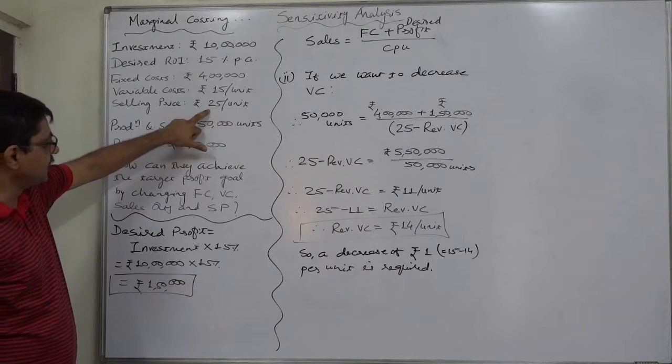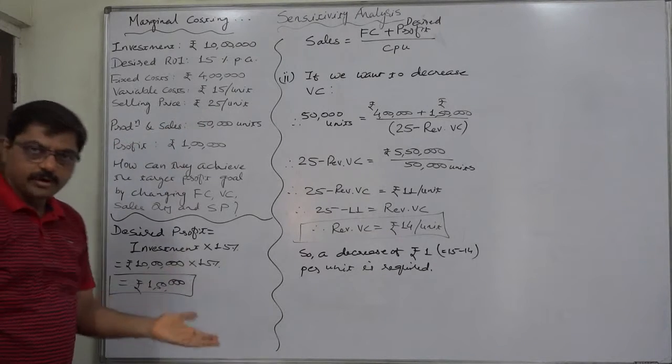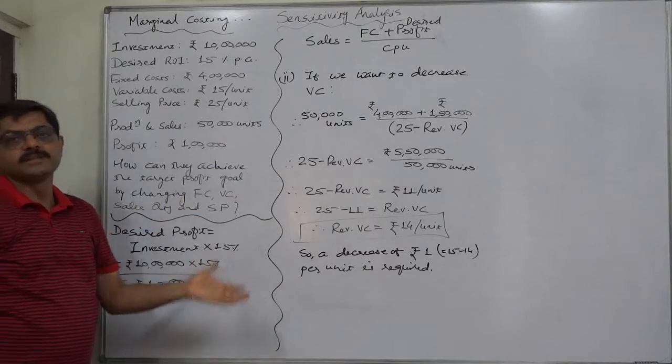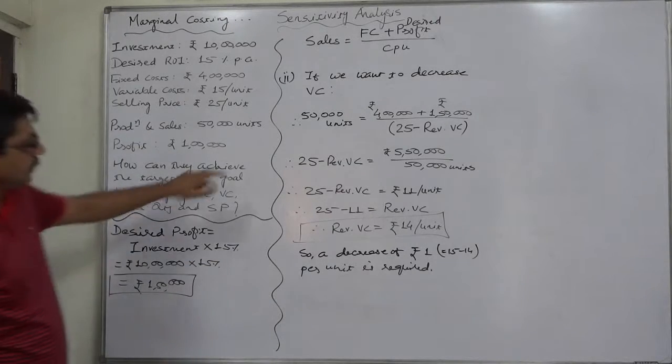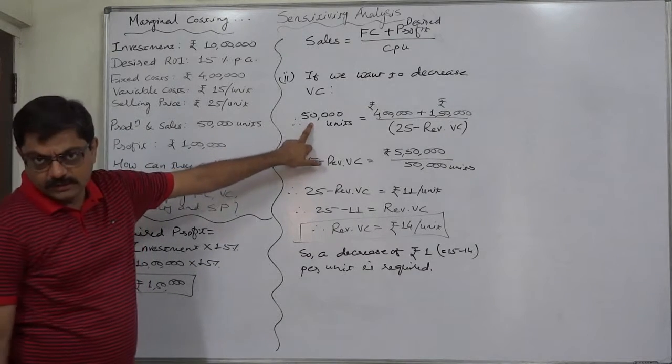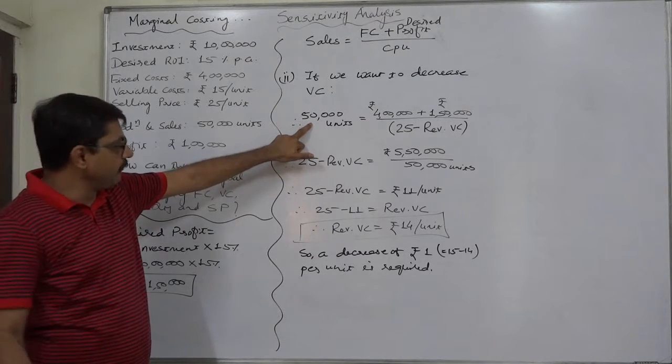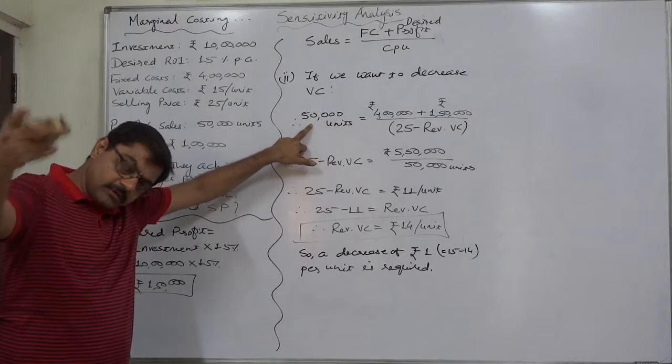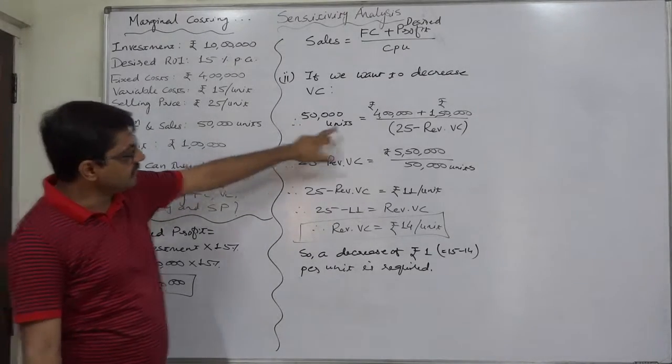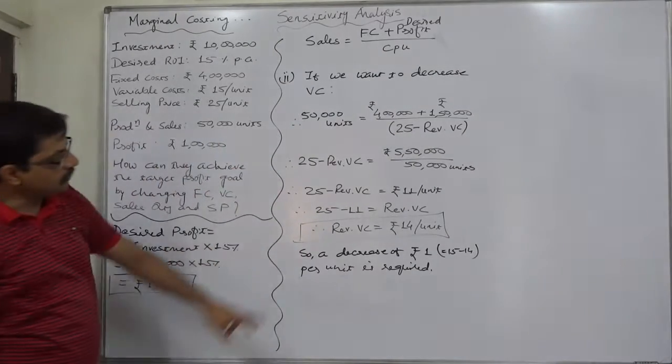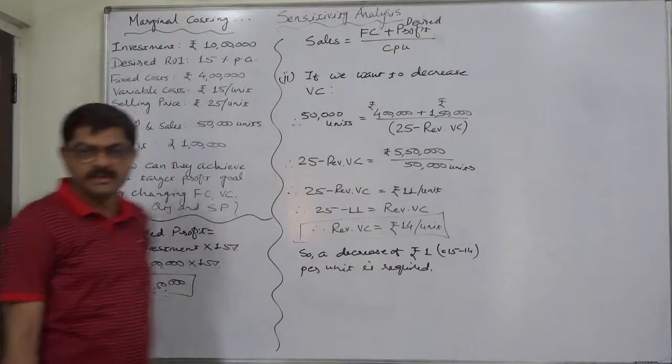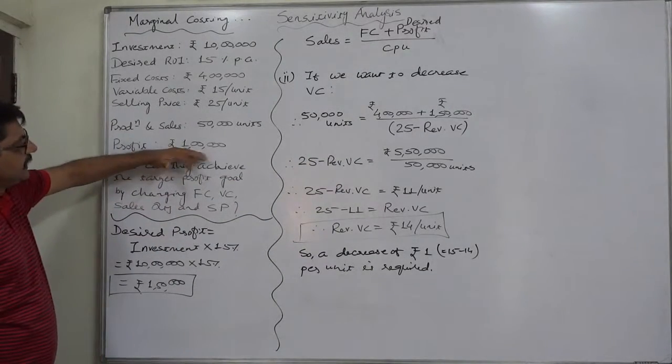Number of units are 50,000, so increase of contribution by ₹1 per unit will increase the total contribution by ₹50,000. Since there is no change in fixed cost, the total profit will also increase by ₹50,000, and ultimately that will be existing ₹1 lakh plus increased ₹50,000 equals ₹1,50,000. That's it.